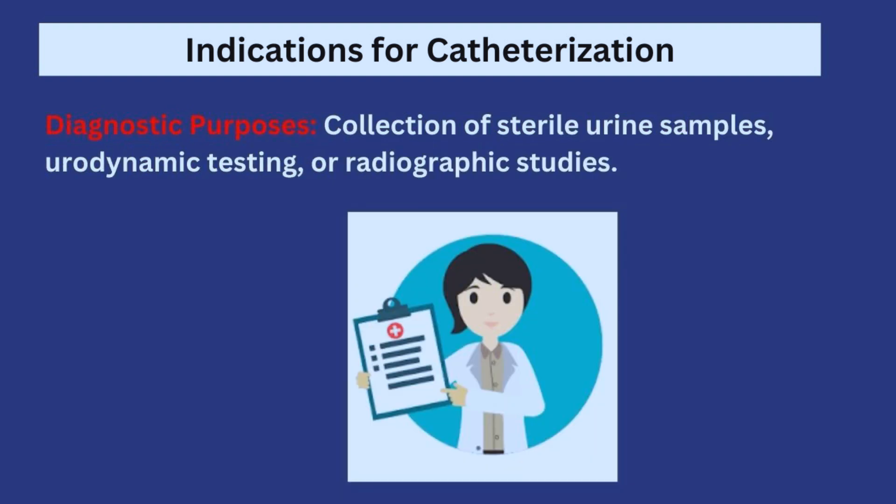Another indication is for diagnostic purposes. You may need a sterile urine sample for a test or for radiographic studies, and the best way to obtain a sterile sample is via the urinary catheter, since the urine has not come into contact with the external environment and is essentially collected from an enclosed space.